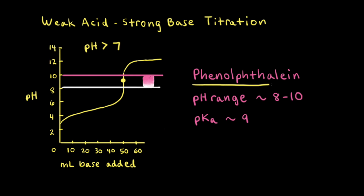Phenolphthalein is another acid-base indicator with a different pH range. At a pH of about 8, phenolphthalein is colorless; however, as the pH changes from 8 to 10, phenolphthalein goes from colorless to pink. Because the color change occurs in the same range as the equivalence point, phenolphthalein is a good choice for this titration. Its pKa value is approximately 9, which falls in the range of 8 to 10 where we find our equivalence point. We can think about it either in terms of the pH range or the pKa value.